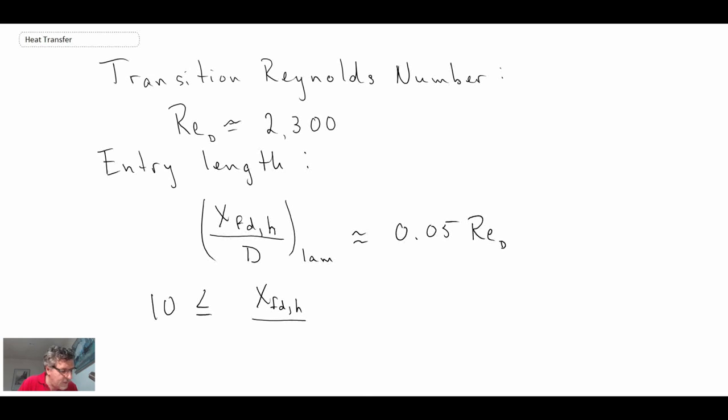To get to fully developed flow for the hydrodynamic flow field, rule of thumb is between 10 and 60 diameters. That's how long it will take to get to fully developed flow for turbulent flow fields.